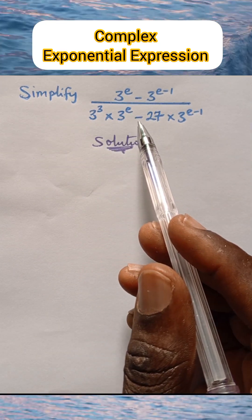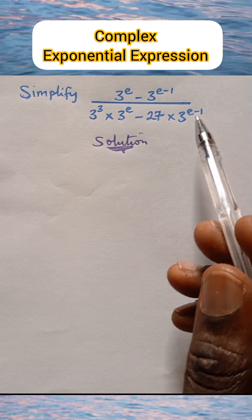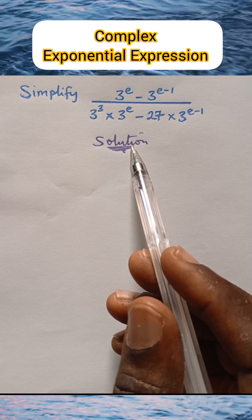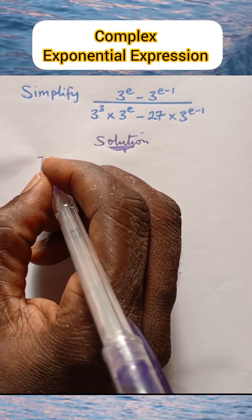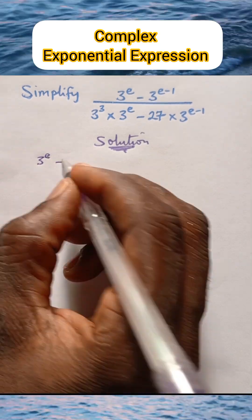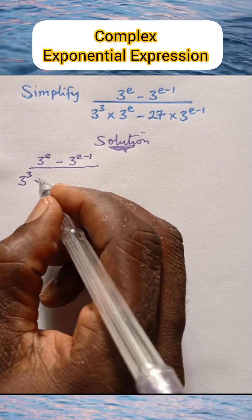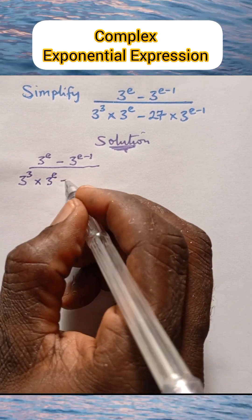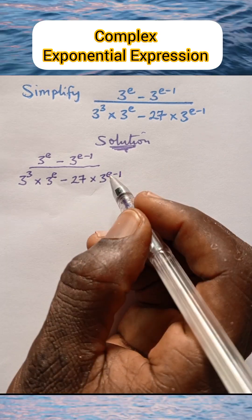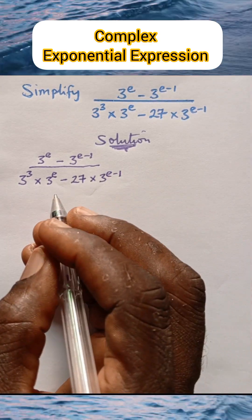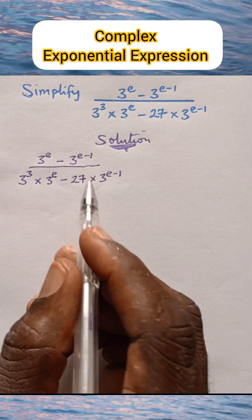Here is the solution. Let us put down this expression: we have 3 raised to power e minus 3 raised to power e minus 1, all over 3 raised to the power of 3 multiplied by 3 raised to power e minus 27 times 3 raised to power e minus 1. Now let us focus on the numerator — we are going to expand these terms.